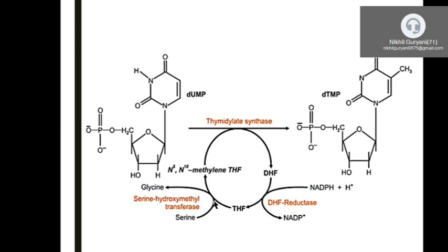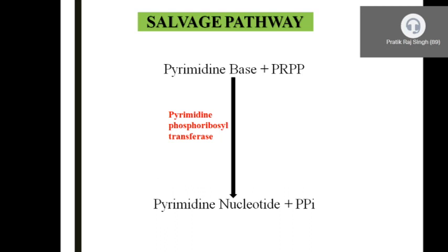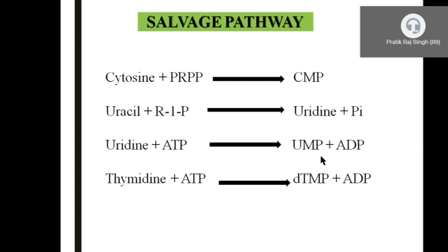The salvage pathway for pyrimidines consumes less energy. Tissues lacking de novo synthesis — brain, WBC, RBC, bone marrow — depend on it. The pyrimidine base combines with PRPP in the presence of pyrimidine phosphoribosyltransferase to produce pyrimidine nucleotides with release of inorganic pyrophosphate. For example: cytosine + PRPP → CMP; uracil + ribose-1-phosphate → uridine + Pi; uridine + ATP → UMP + ADP; thymidine + ATP → dTMP.